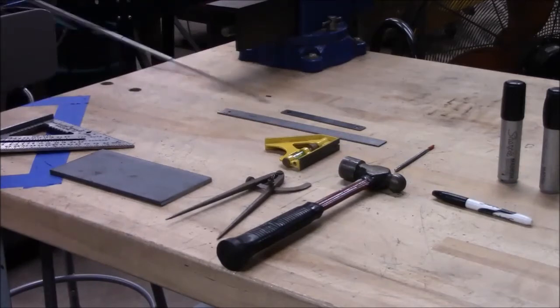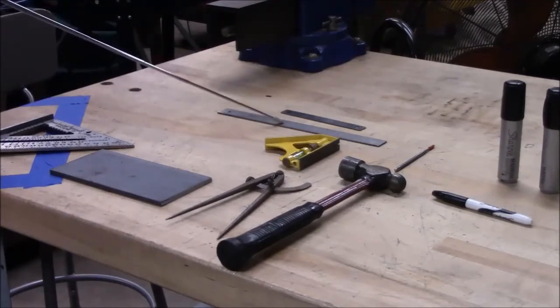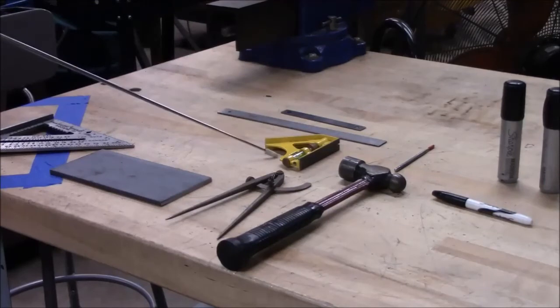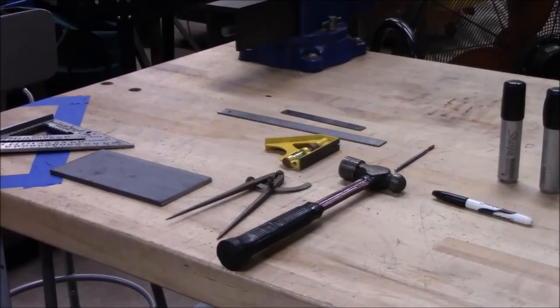The next one is a combination square with a ruler and a 45-degree, 90-degree combination head. The 45-degree and 90-degree gives you a chance to measure your piece of material in the corners, lengths, and width.